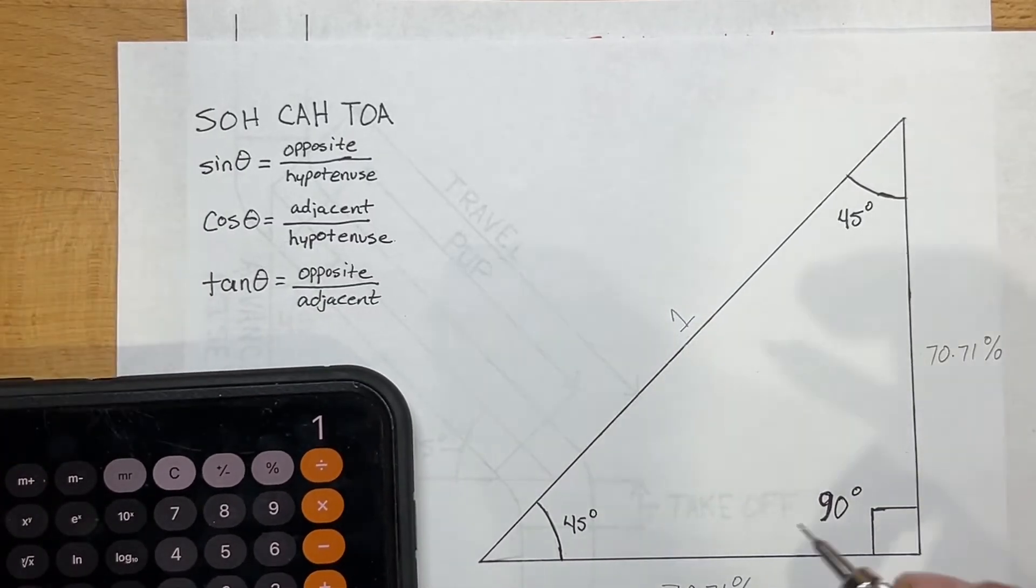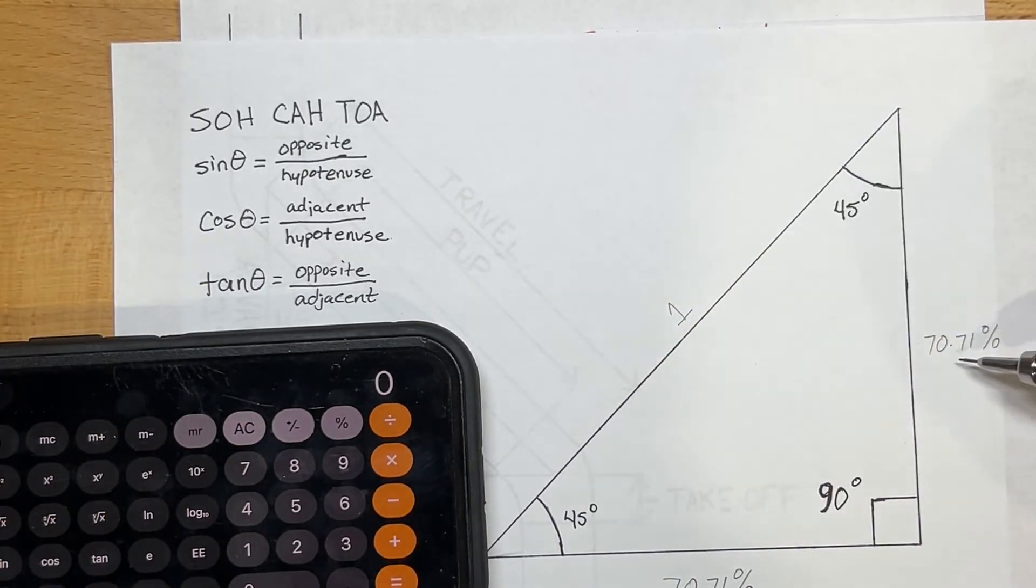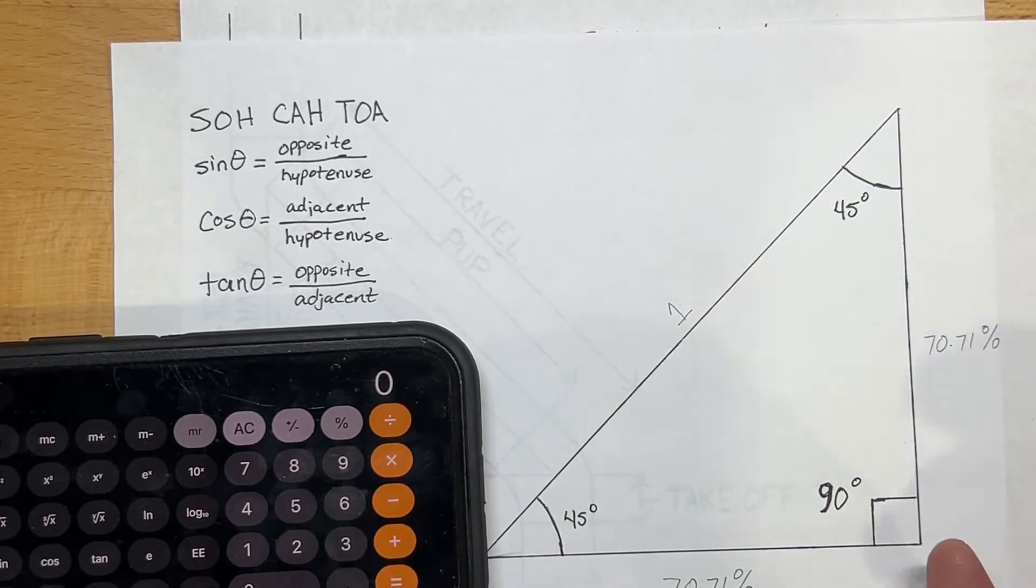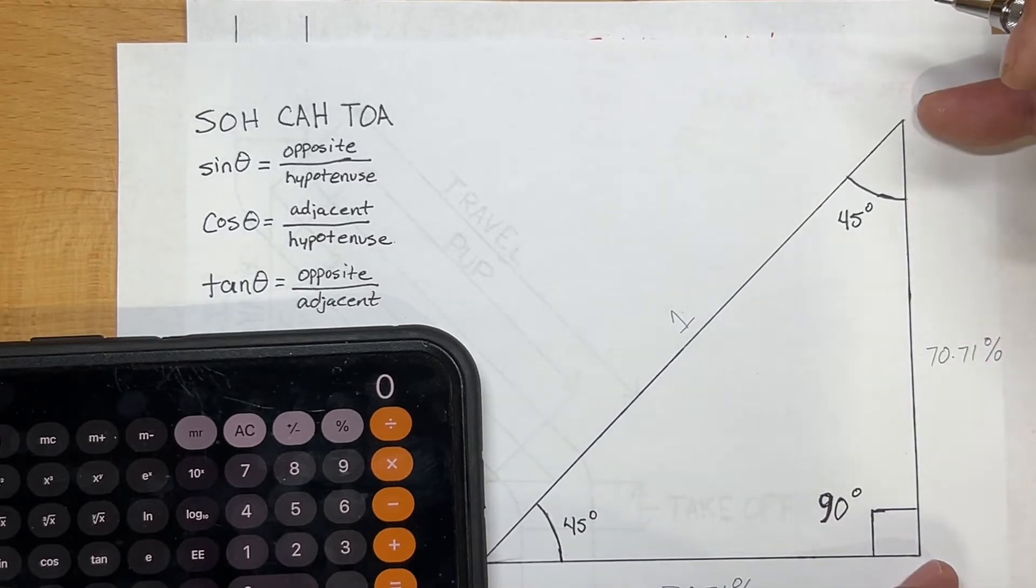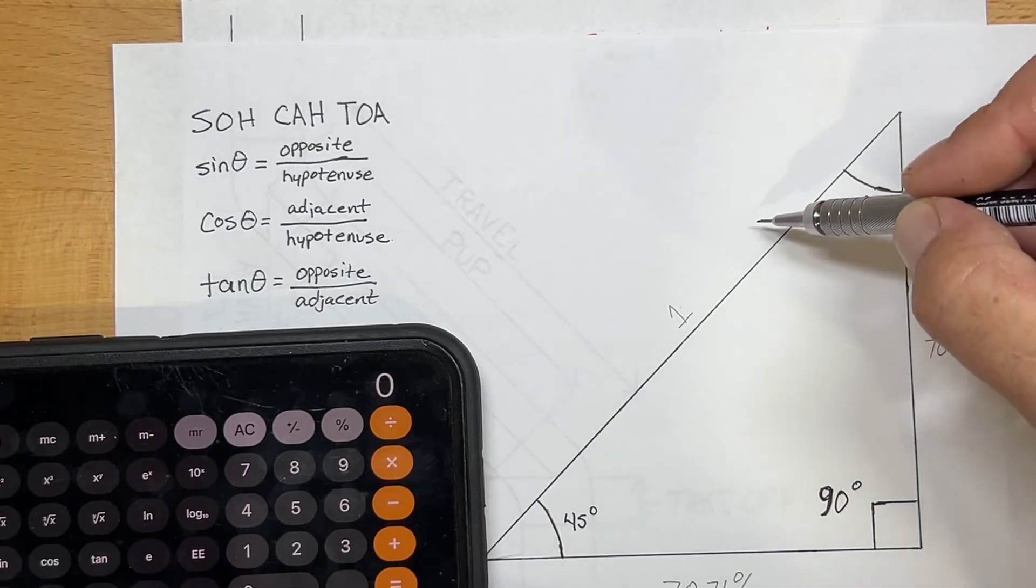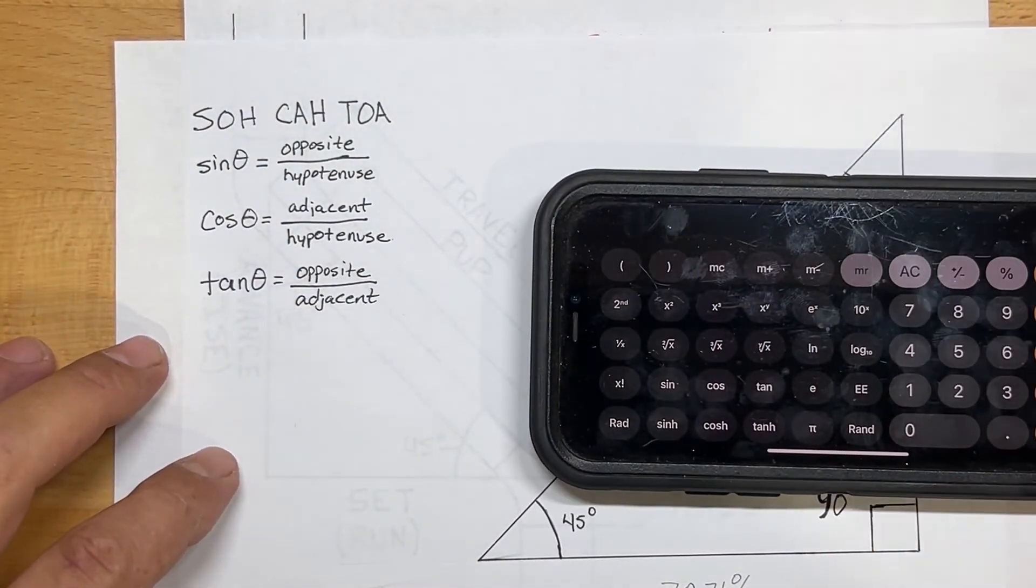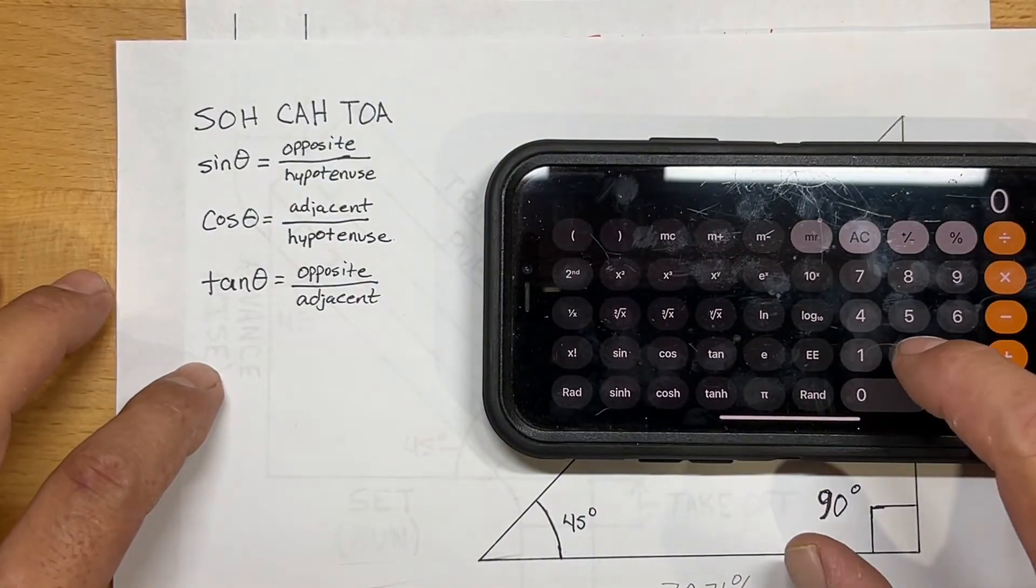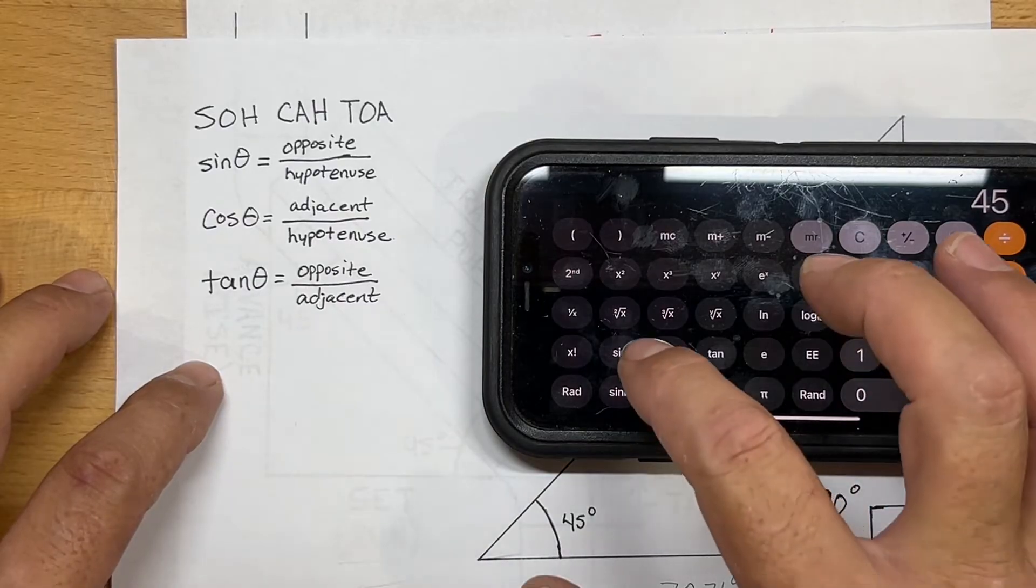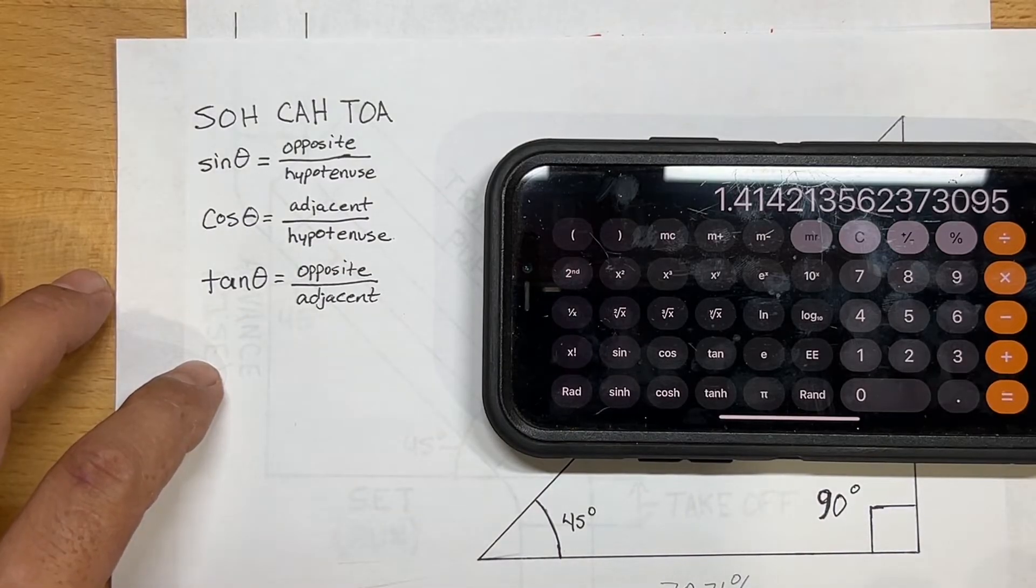So you might ask, how did they get 1.414 then? Well, let's go back to the sine. So this one is 70.71% the length of this one. But what we want to find out, because what we'll know is this will be our run or our set. So what we want to know is if this one is equal to one unit, what is the distance over here. And to do that, you have to do the inverse of sine, which I'll show you in a formula here in just a little bit. But you'll do 1 divided by, and we'll input our angle, 1 over the sine of 45 degrees, and then hit equal, and there comes the magic number, 1.414.